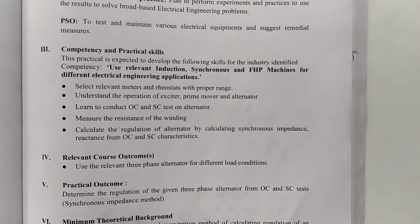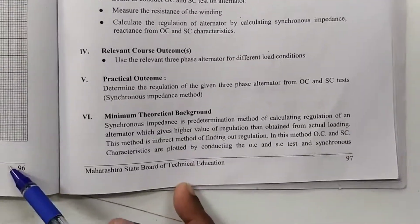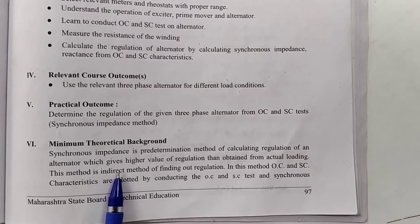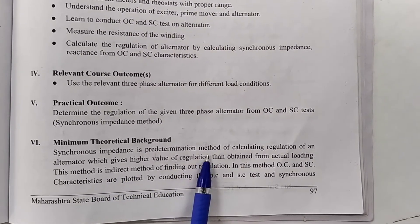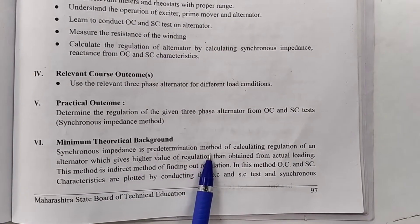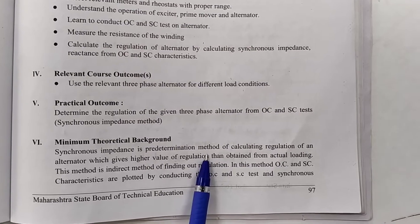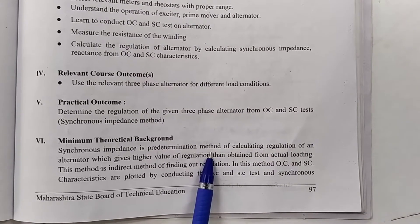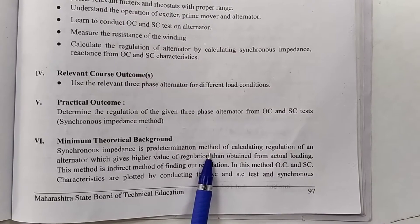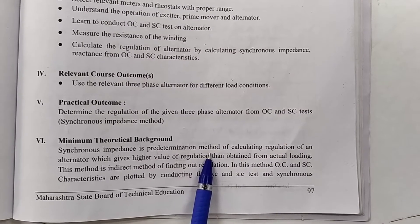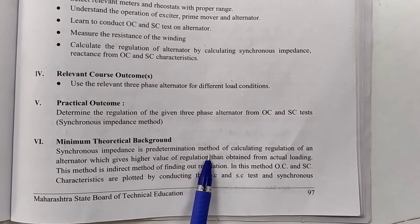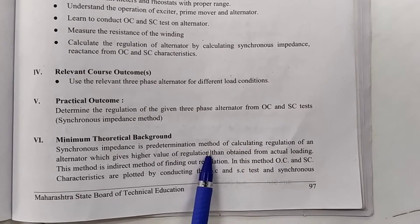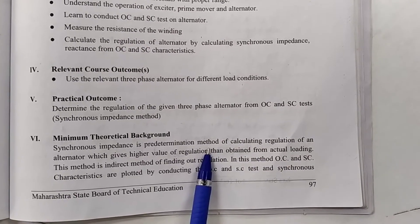Here is the minimum theoretical background. Synchronous Impedance Predetermination Method of calculating regulation — this method is very accurate and is a power-saving method. Results are calculated from the readings taken during the open circuit and short circuit test.